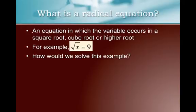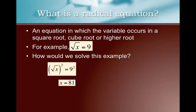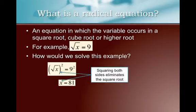Well, we've got to get rid of that radical or that square root. So how do we undo a square root? We're going to square the square root. Now, if I square one side of the equation, obviously I have to square the other side. And so the square and the square root undo each other, and I have x equals 9 squared, which is 81.